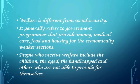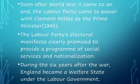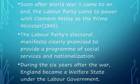Through the welfare state system, people receive welfare which includes children, aged people, the handicapped, and others who are not able to provide for themselves. As soon as the Second World War came to an end, the Labour Party came to power with Clement Attlee as the Prime Minister of the UK. Nearly six years after the war, England became a welfare state under the Labour government.